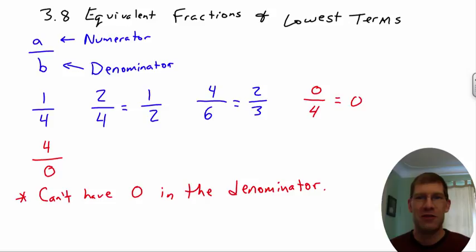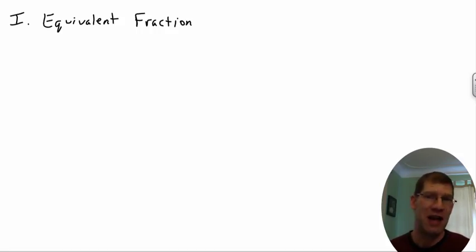So now if we're going to go on into hitting the stuff that's actually in the title, we could say Roman numeral one then, equivalent fractions. And really when we're talking about equivalent fractions, what we're really talking about is two fractions that are going to be equal. And tomorrow's notes, this three nine, is going to talk about how do you compare fractions as far as different sizes.